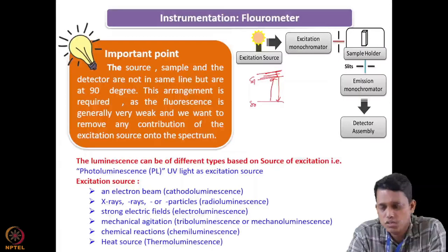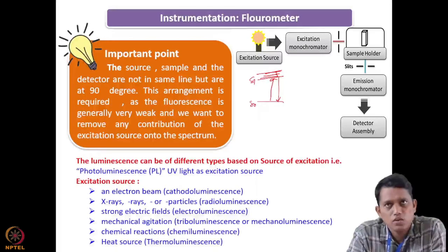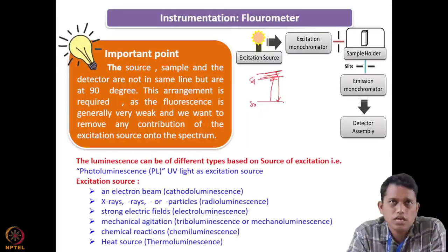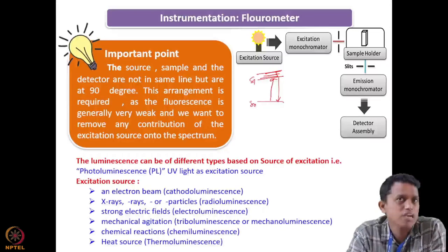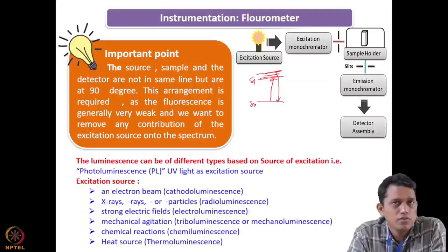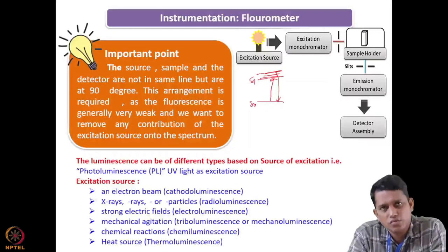From there you select the emission monochromator and record the emission spectra. Depending on the excitation source, you can have different kinds of luminescence. For example, cathodoluminescence uses an electron beam as excitation source; if you use X-rays or particles it is called radioluminescence; if you use an electric field it is electroluminescence. So depending on the nature of your excitation source, you can have a variety of luminescence, ranging from cathodoluminescence to thermoluminescence.